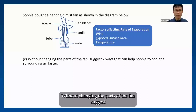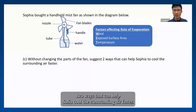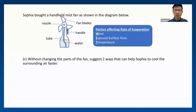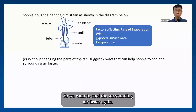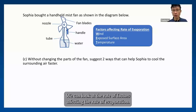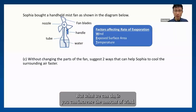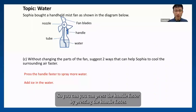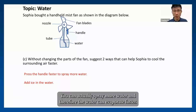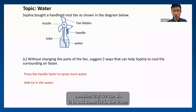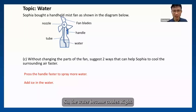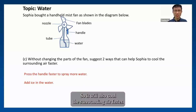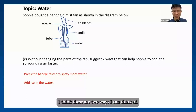Without changing the parts of the fan, suggest two ways that can help Sophia cool the surrounding air faster. We want to cool the surrounding air faster, so we can look at the factors affecting the rate of evaporation. You can press the handle faster — by pressing the handle faster, you can spray more water, and therefore the water can evaporate faster. The other way is to add some ice in the water, so the water becomes cooler, and you also cool the surrounding air faster.